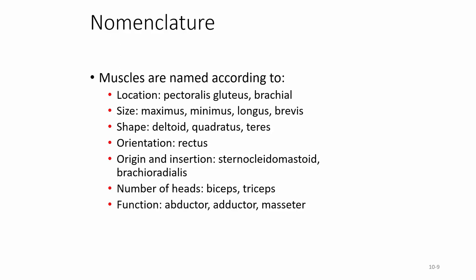Muscles can also be named by orientation, such as rectus, which means straight. They can be named by origin and insertion — for example, the sternocleidomastoid attaches from the sternum, 'kleido' refers to the clavicle, and it goes up to attach at the mastoid process behind the ear. Similarly, the brachioradialis runs from the brachial arm region to the radius in the forearm.